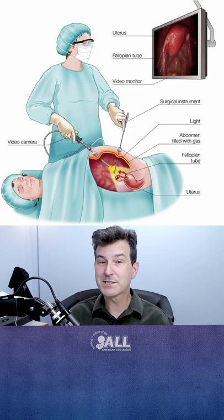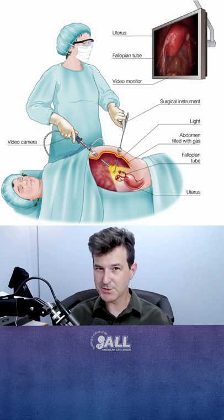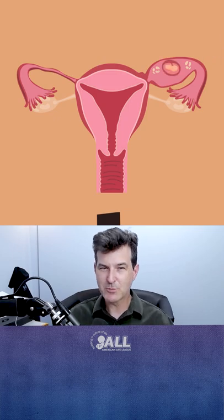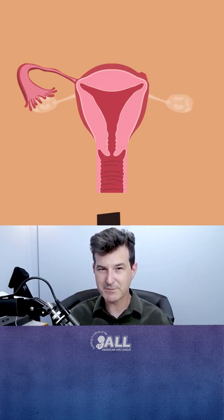Another treatment is a laparoscopic procedure where the doctor inserts tools through a small incision in the mother's abdomen. He can either remove the baby, called a salpingostomy, or remove the fallopian tube with the baby in it, called a salpingectomy.